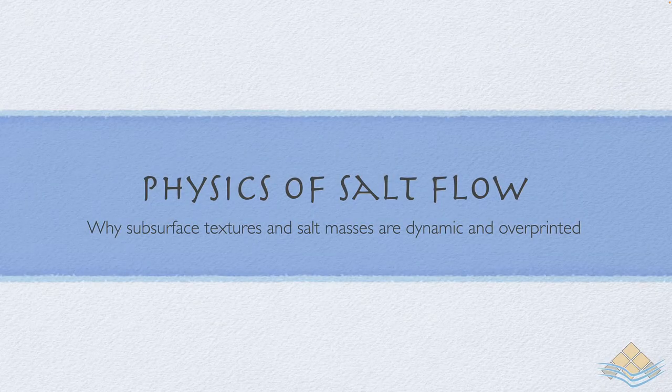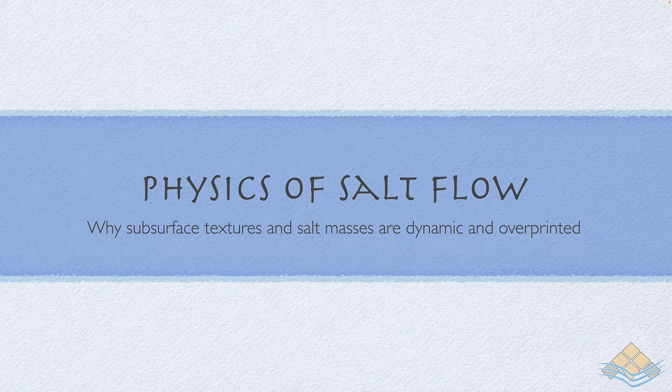Rock salt in the diagenetic realm is an unusual sediment because of the interesting properties of halite, its main constituent, and the way that halite behaves at relatively low temperatures. This explains why the textures and shapes of salt masses are dynamic and subject to multiple overprint stages and recrystallization as salt flows.